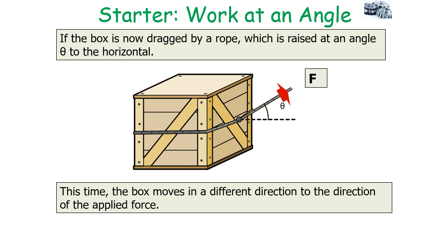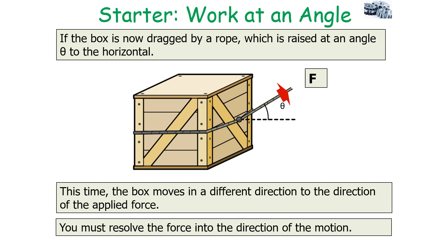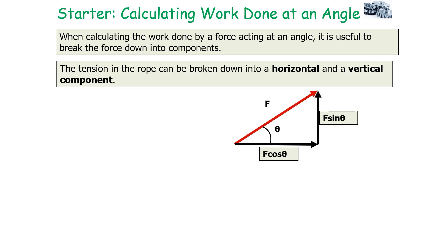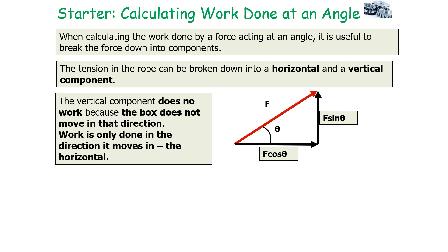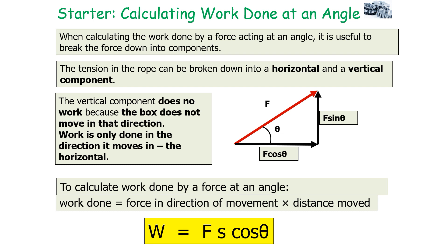If the box is dragged by a rope raised at an angle theta to the horizontal, the box is moving in a different direction to the applied force. You must find the component of force acting in the direction of movement — resolving the force into the direction of motion. The tension in the rope can be broken down into horizontal and vertical components. The vertical component does no work because the box does not move vertically; work is only done in the direction of motion. So work done equals force times distance times cosine of the angle — Fs cos θ.